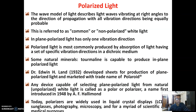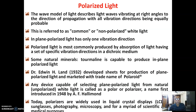Dr. Edwin Land in 1932 developed a sheet for production of plane polarized light, which was marketed under the trade name Polaroid. Any device capable of selecting plane polarized light from natural or unpolarized white light is called a polar or polarizer.